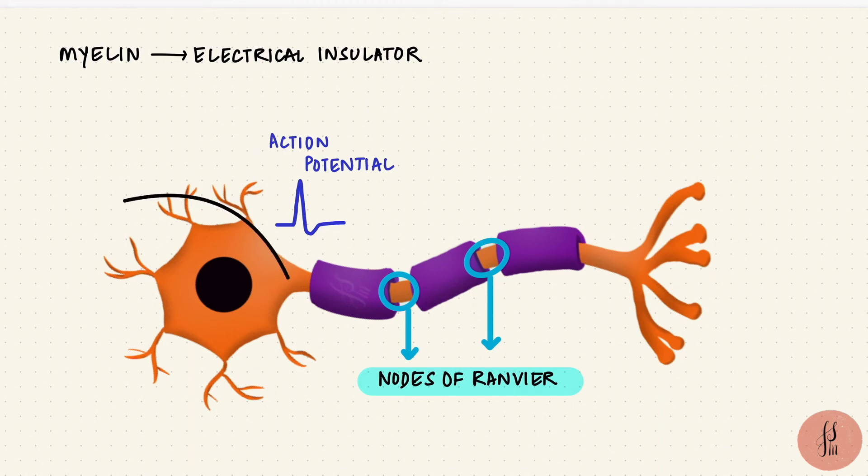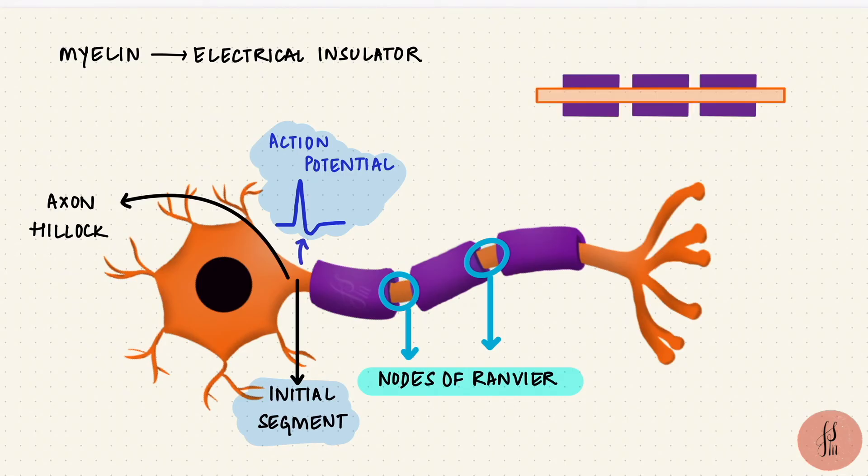The point at which the axon originates from the cell body is called the axon hillock. And the first portion of the axon is called the initial segment. This is where action potentials usually start, because they have a high number of voltage-gated sodium channels. It's these channels that are responsible for the action potential.